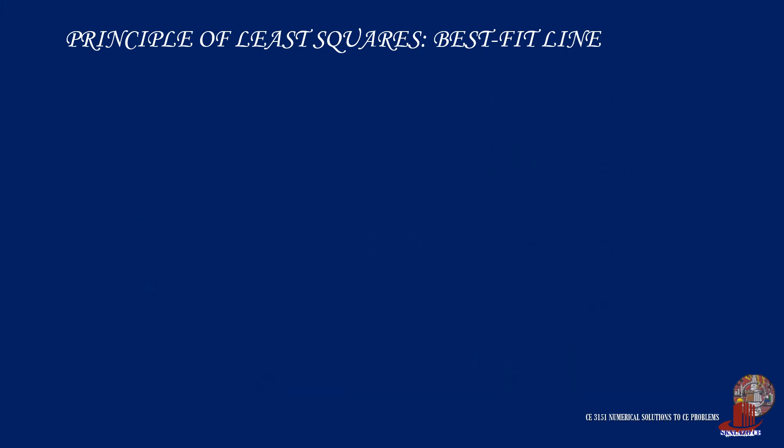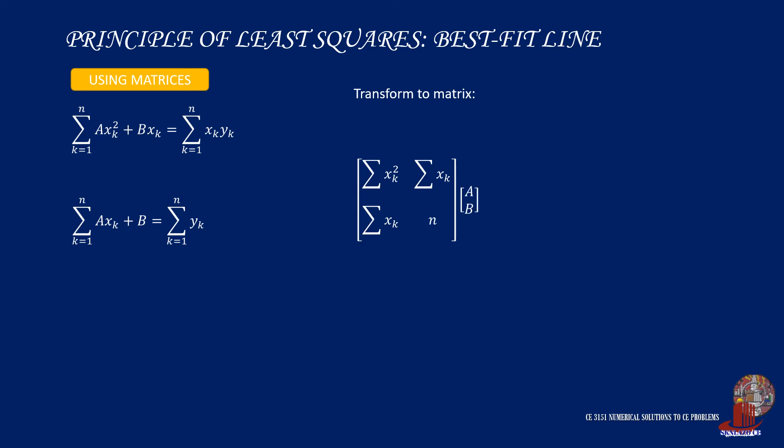The first way of solving for the equation of the best fit line is by using matrices. So with the two equations we derived earlier, transform them into matrices with two unknowns, a and b.